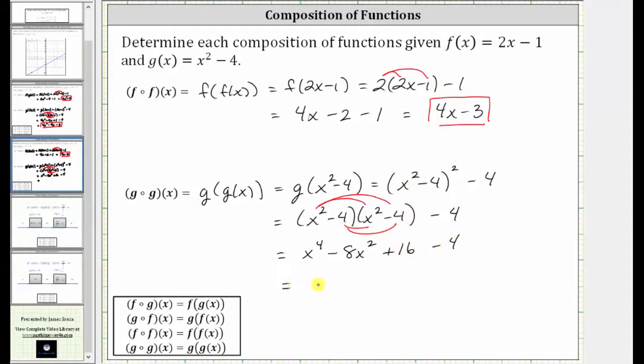Combining like terms, we have x to the 4th minus 8x squared, and then 16 minus 4 is 12, giving us plus 12. g of g of x is equal to x to the 4th minus 8x squared plus 12.